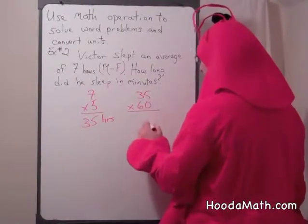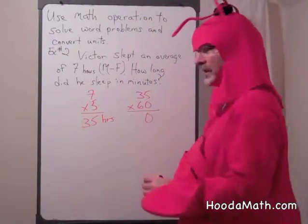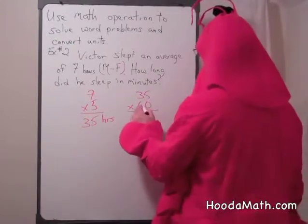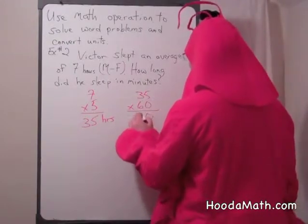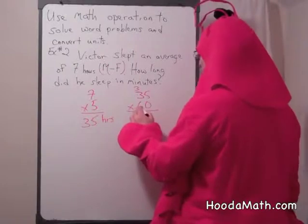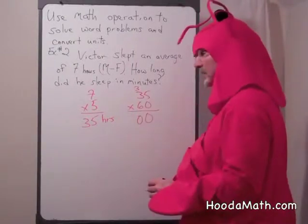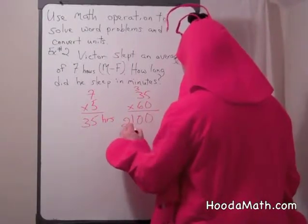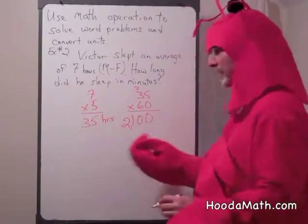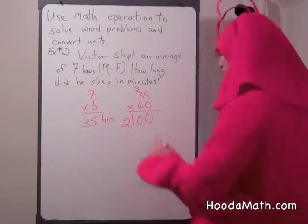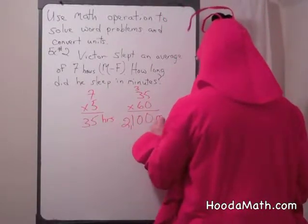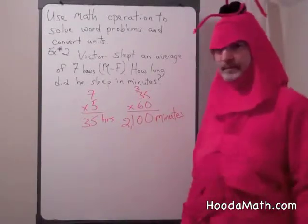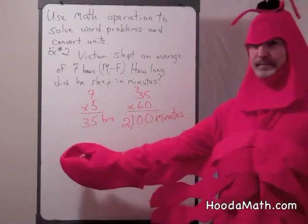We know 60 is 10 times 6, so we put the zero for the 10, multiply by 10, and then multiply by 6. 6 times 5 is 30. Regroup. 6 times 3 is 18, and 3 is 21. So 35 hours equals 2,100 minutes. Good job!